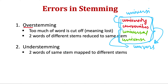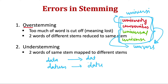Understemming is the opposite: two words of the same stem are mapped to different stems. For example, 'data' and 'datum' — if the stemmer reduces 'data' to 'dat' and 'datum' to 'datu', it has broken them into two different stems, although both should have been mapped to a common stem. This is the case of understemming.